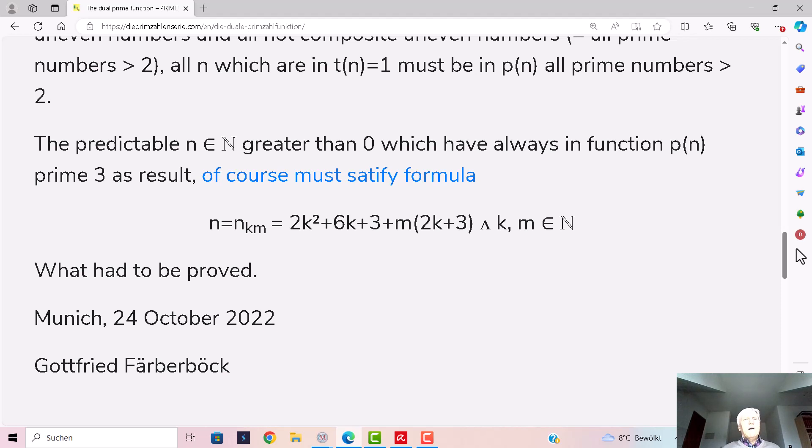The predictable n greater than 0, which always have in function p(n) prime 3 as result, of course must satisfy the formula. Please read this formula, and you have the answer.